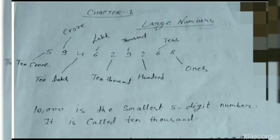Now you have studied 1, 2, and 3-digit numbers in your previous studies. But what do we do here? We study 5, 6, and 7-digit numbers. First of all, we write the number and see how it goes from the right-hand side.